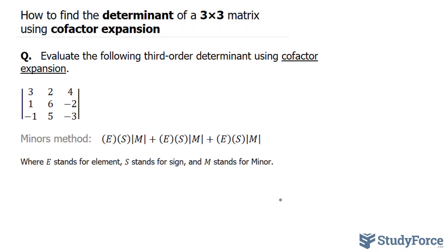And the formula, namely for 3x3 matrices using cofactor expansion, is shown underneath. It's a very simplistic formula, but it needs some explanation. As you can see, we have ESM. E stands for element, S stands for sign, and M stands for minor.